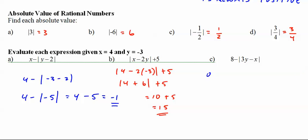And over here, 8 minus 3 times the absolute value of negative 3 minus 4. I really should make these absolute values bigger, it's a little bit easier to see them. 8 minus the absolute value of negative 9 minus 4 equals 8 minus 13 equals negative 5.